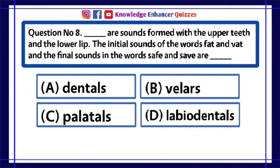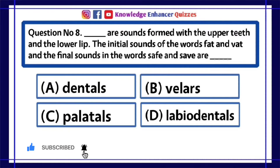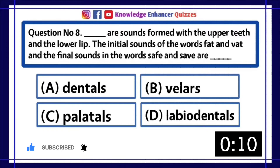Question number 8. Dash are sounds formed with the upper teeth and the lower lip. The initial sounds of the words fat and vat, and the final sounds in the words safe and save, are dash. A. Dentals. B. Velars. C. Palatals. D. Labiodentals.